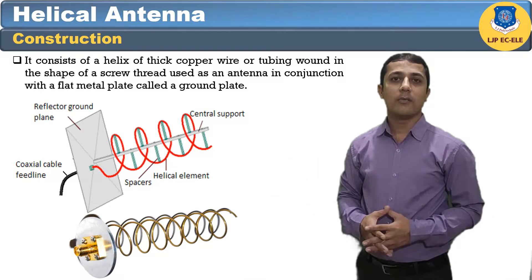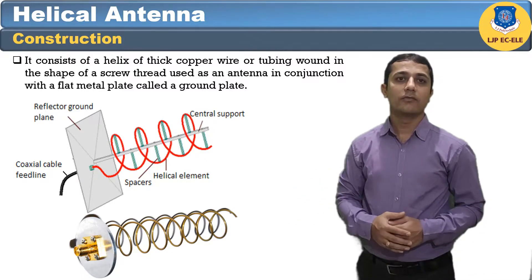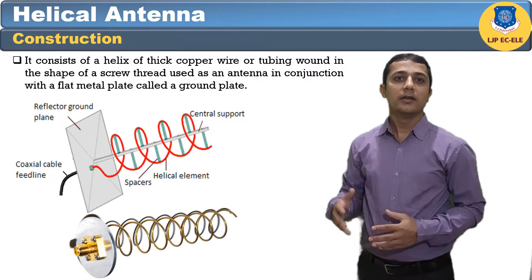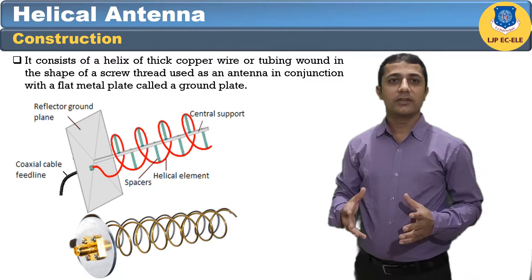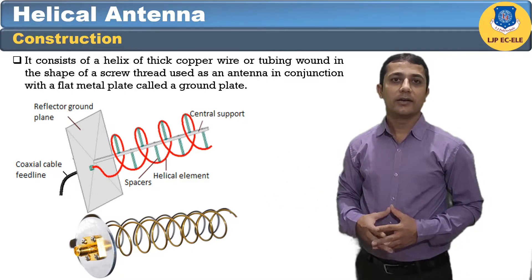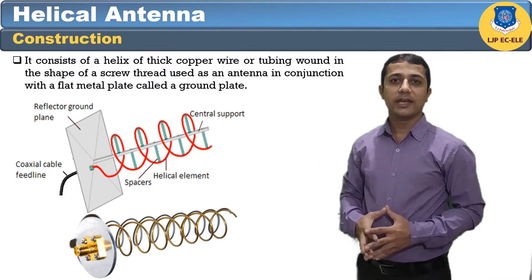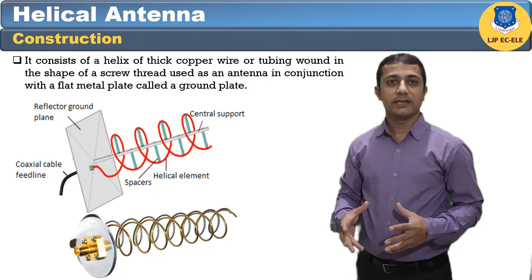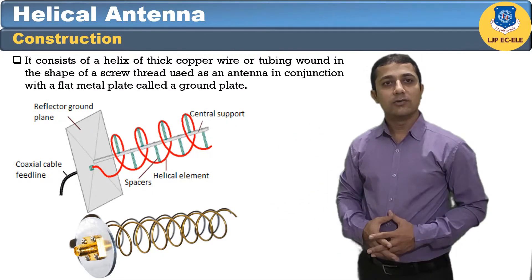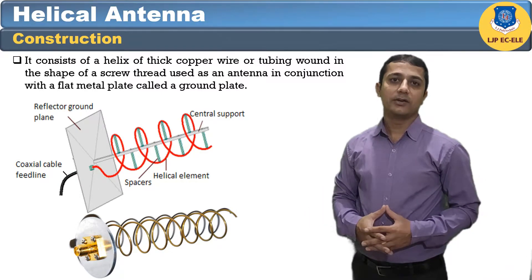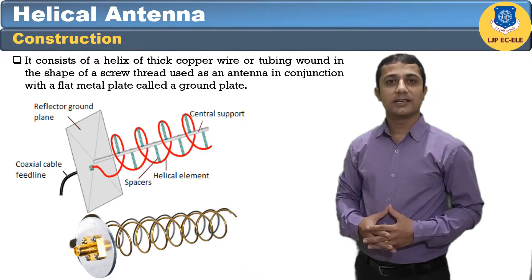This antenna requires wider outdoor space. It consists of a helix of thick copper wire or tubing wound in the shape of a screw thread, used as an antenna in conjunction with a flat metal plate called the ground plate. One end of the helix is connected to the center conductor of the cable and the outer conductor is connected to the ground plate.